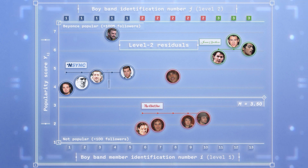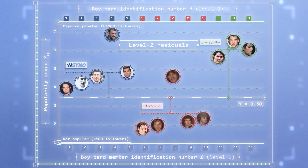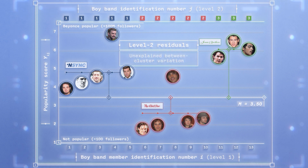On the other hand, the between-cluster residuals are calculated as the mean of the square distance of N-Sync, Clique 5, the Jonas Brothers, and so on and so forth from the grand mean. This captures the unexplained between-cluster variations.